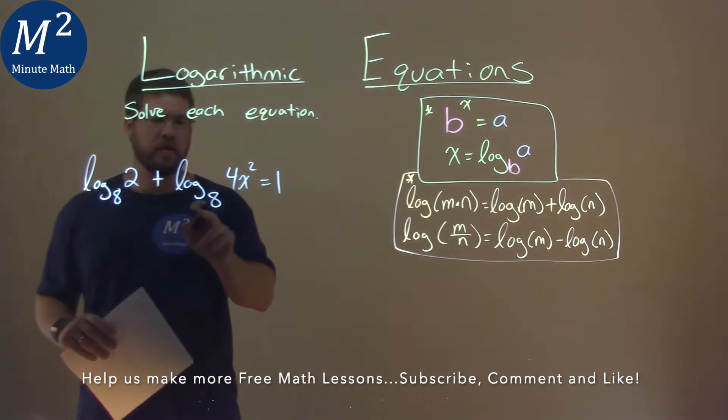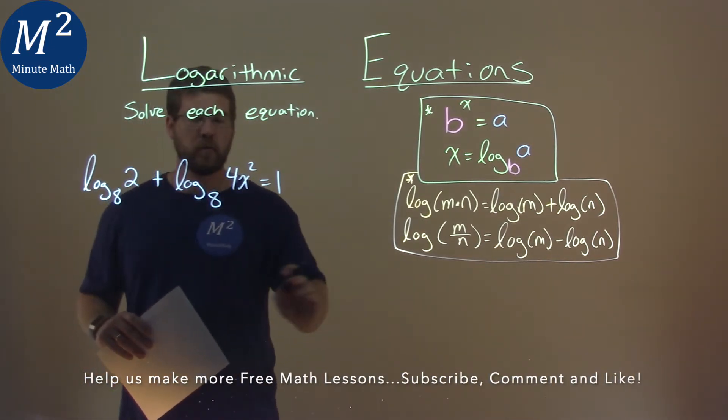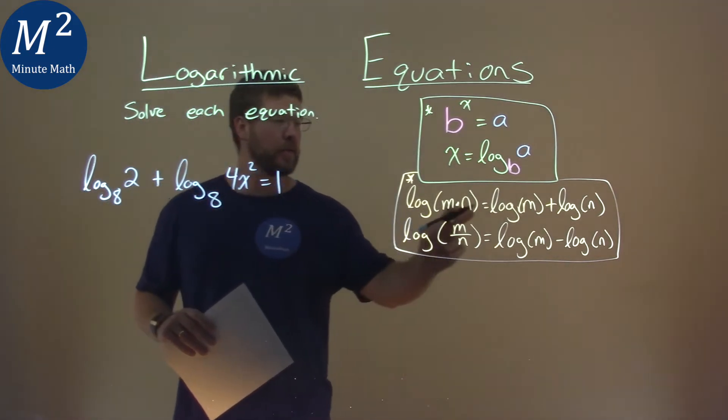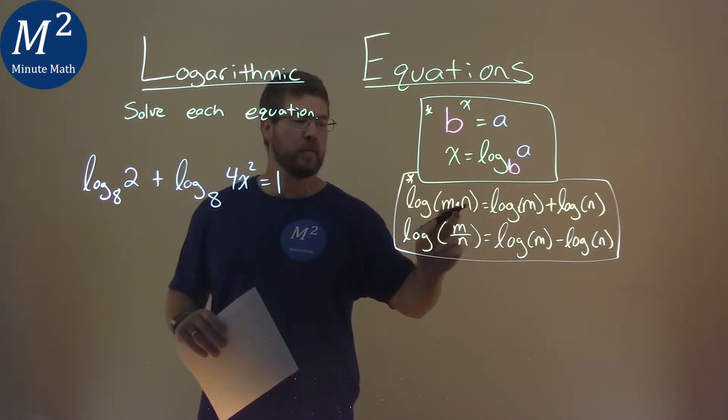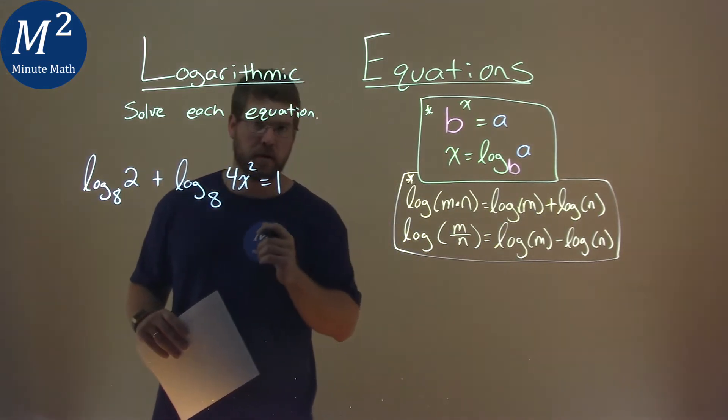We have the same base of log base 8 here, and our rules tell us when we add them together—log the same base—we multiply the inside so we can put it as one big logarithm.